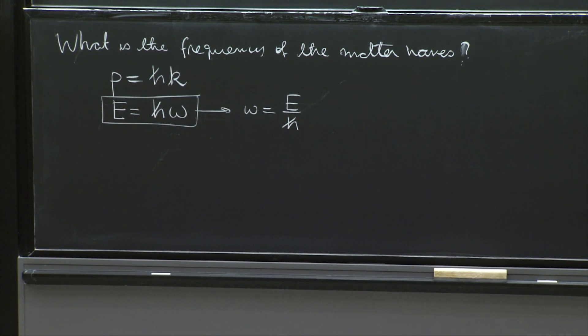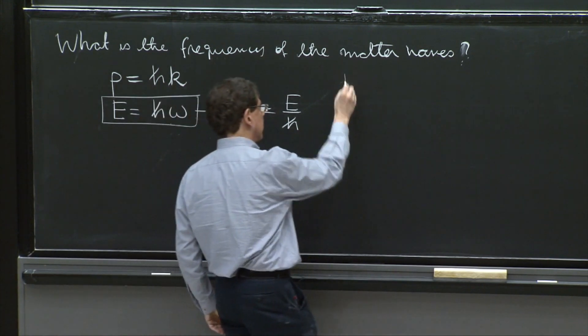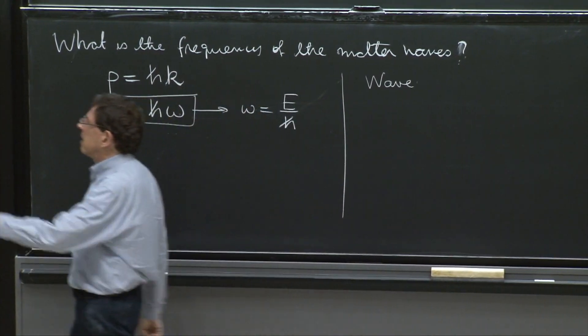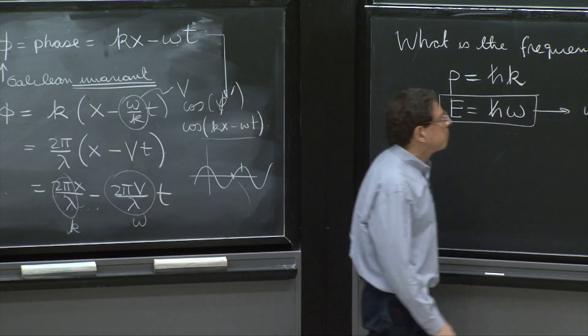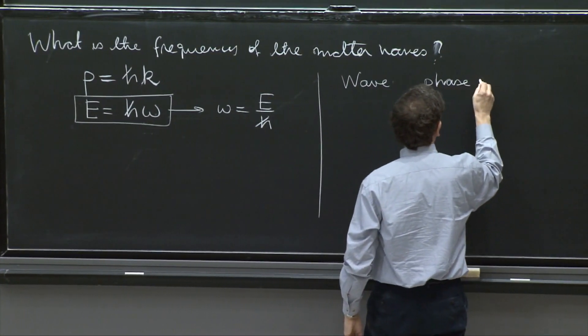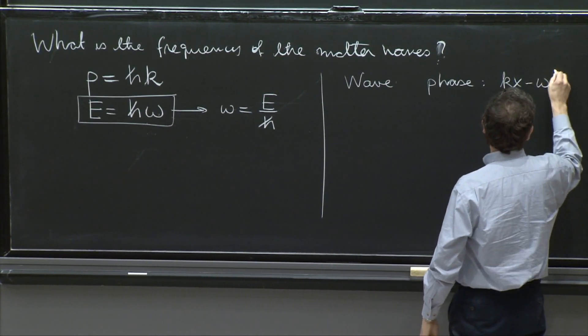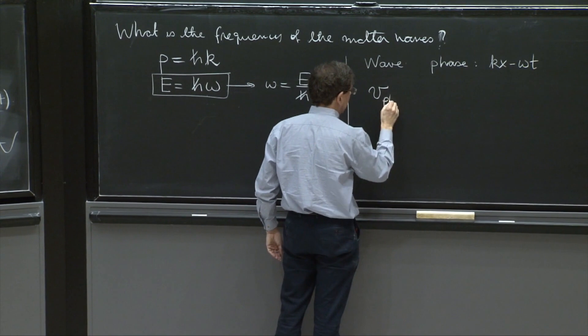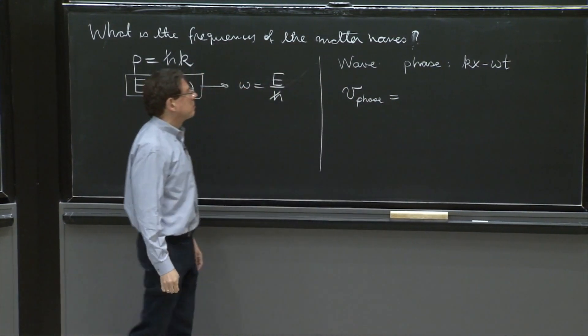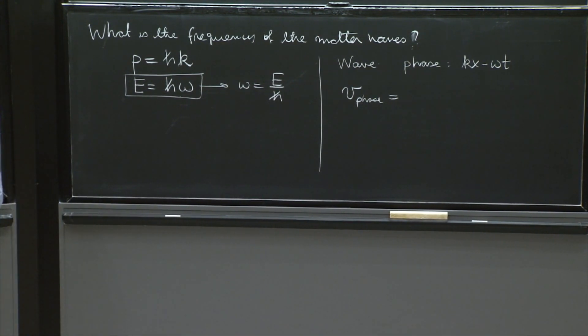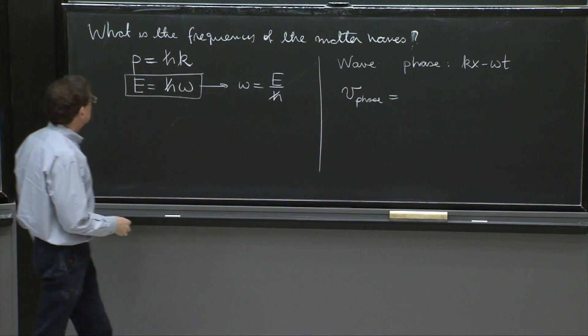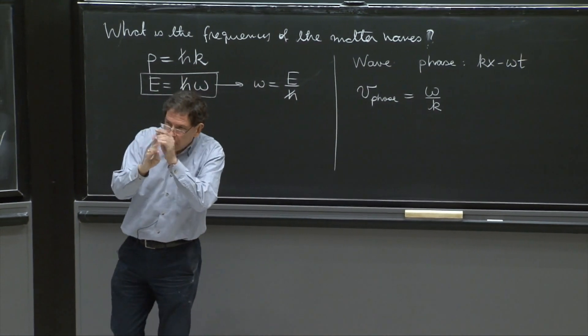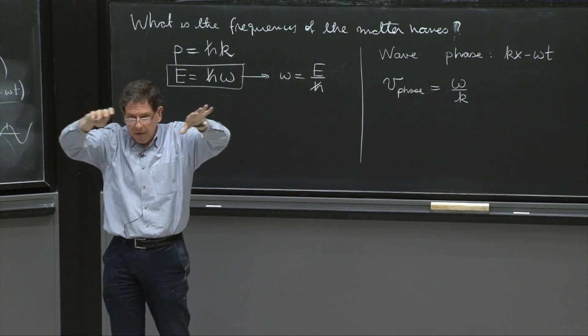So I want to remind you about velocities of waves. So if you have a wave now that has k and omega, you have this thing, kx minus omega t wave with a phase. Then there is something called the phase velocity, and it's given by omega over k. It's the velocity in which the nodes and maxima of this plane wave move.